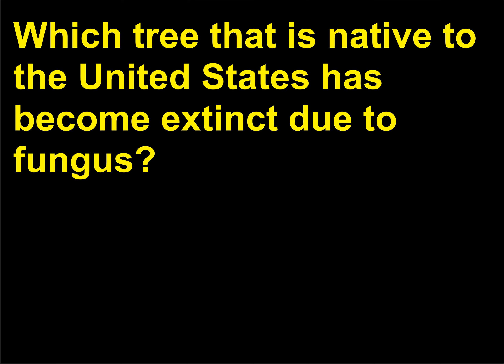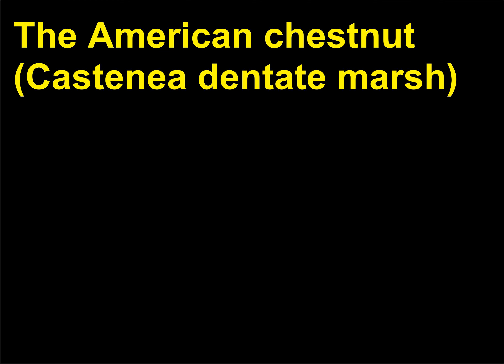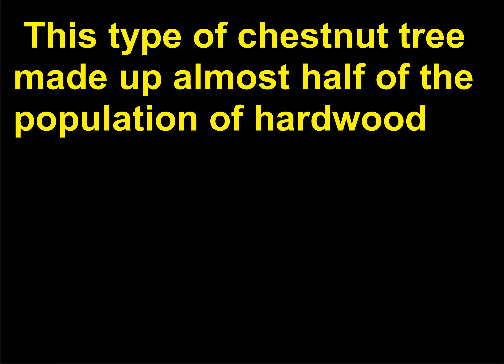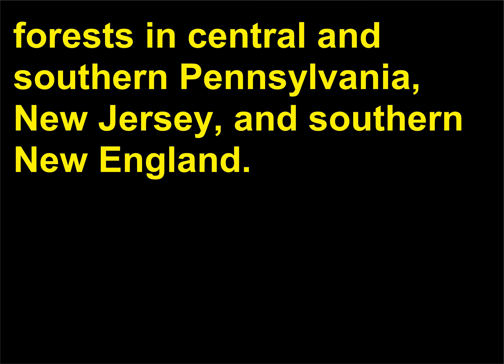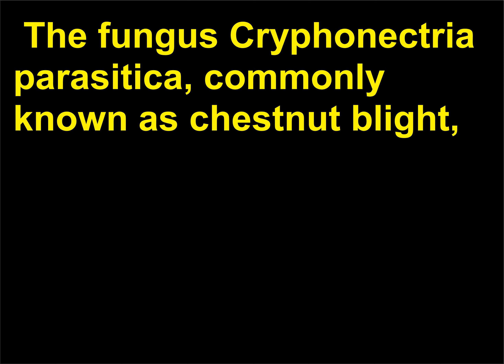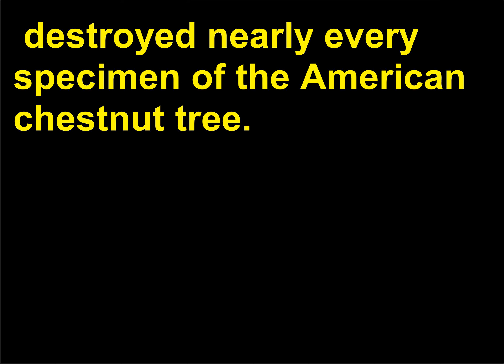Which tree that is native to the United States has become extinct due to fungus? The American chestnut, Castanea dentata, was widespread across eastern North America until the early 1900s. This type of chestnut tree made up almost half of the population of hardwood forests in central and southern Pennsylvania, New Jersey, and southern New England. In its entire range, the species dominated deciduous forests, making up almost one-quarter of the trees. The fungus Cryphonectria parasitica, commonly known as chestnut blight, destroyed nearly every specimen of the American chestnut tree.